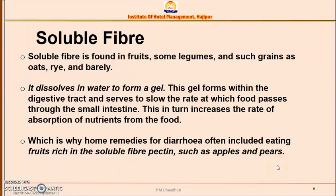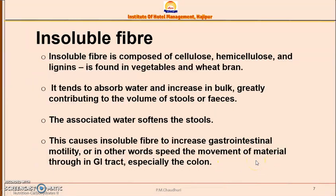In diarrhea or loose motions, fruits like apples and pears are recommended because they are high in soluble fiber — specifically pectin. The higher pectin content of apples and pears is why they are given during diarrhea.